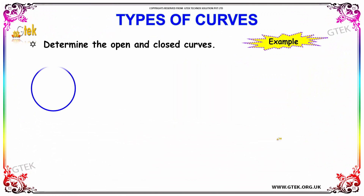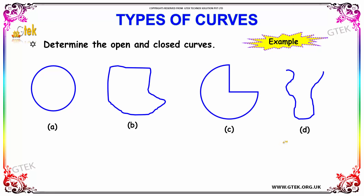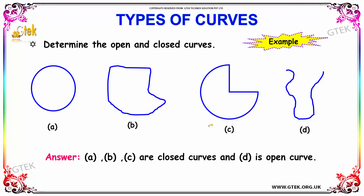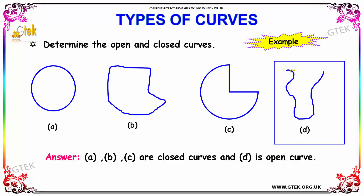Next, we have an example on types of curves where you have to determine the open and closed curves. The answer is: options A, B, and C are closed curves, and option D is an open curve. As you can see, the end points do not meet in D — hence it is an open curve. The end points meet in A, B, and C — hence they are closed curves.